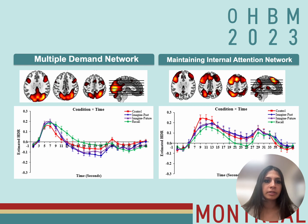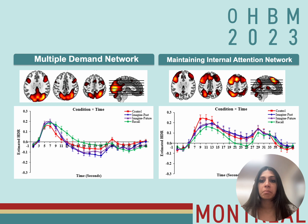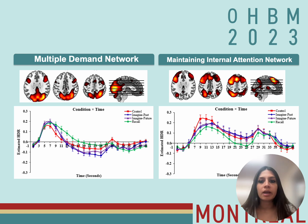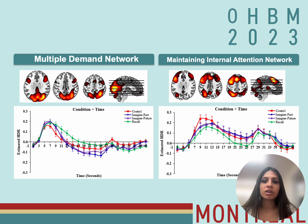Shown here are the multiple demand network and the maintaining internal attention network side by side. When the multiple demand network showed a mid-trial deactivation, the maintaining internal attention network showed a mid-trial activation, and this was the case in all conditions. This suggests that the multiple demand network and the maintaining internal attention network activate in reciprocity — meaning volitional attention must be directed either internally or externally, and this cannot occur simultaneously.